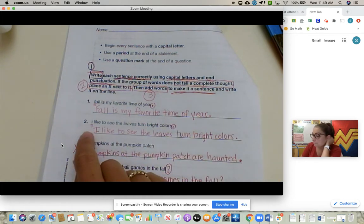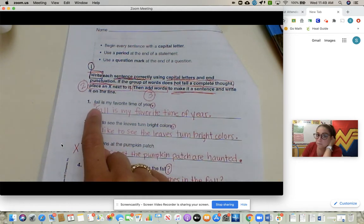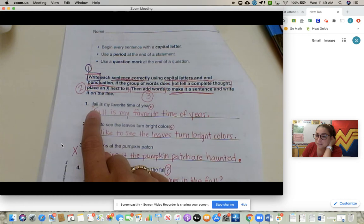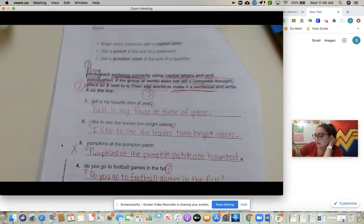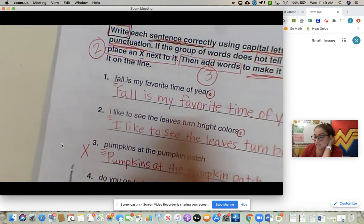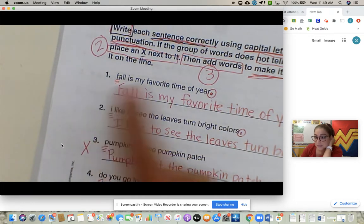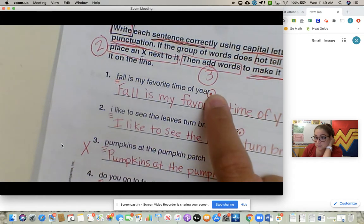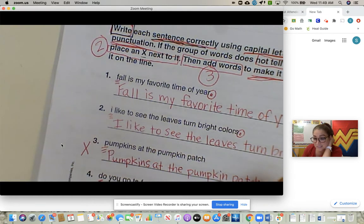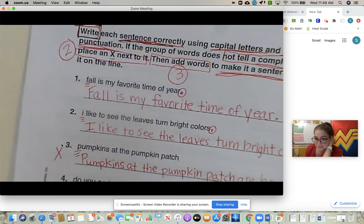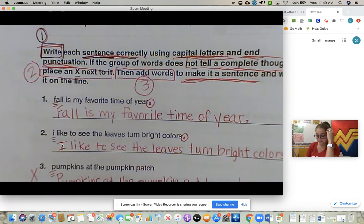But just so you know, whenever you edit or proofread, three lines underneath a letter means you need to capitalize that letter. So when you proofread, when you add punctuation, you circle the punctuation so it's easy to see. And then rewrite the sentence. So we completed that.